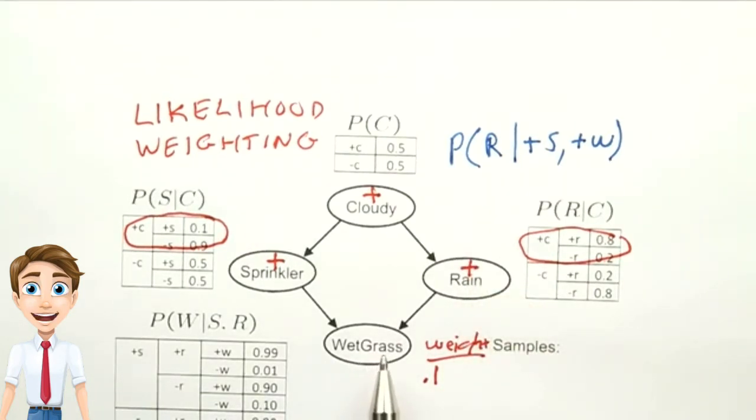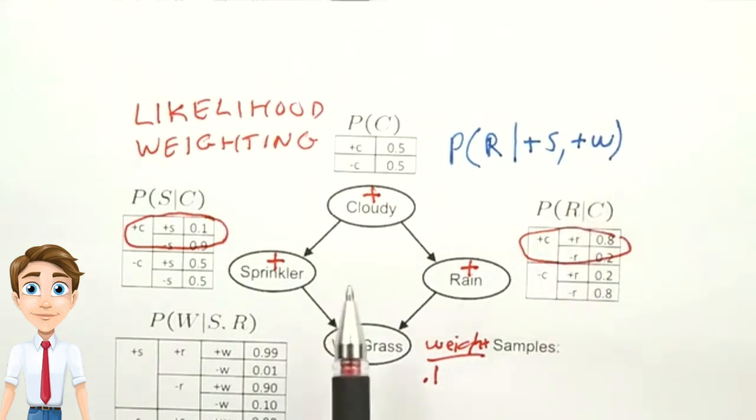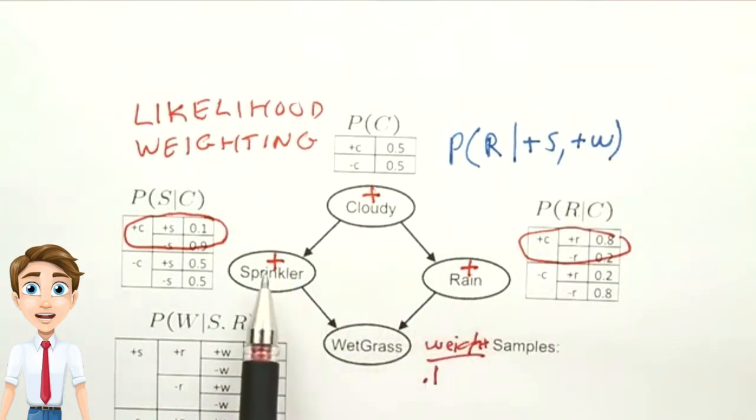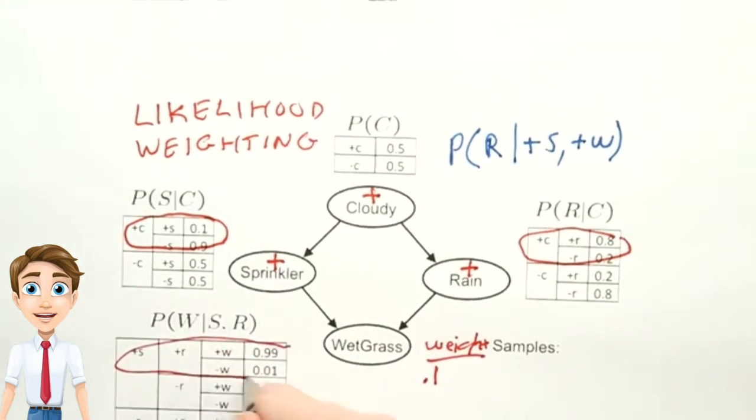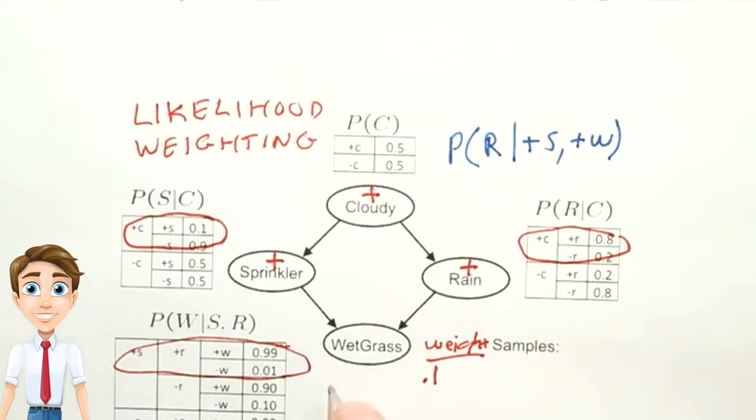Now we look at wet grass. We're constrained to choose positive, and we know that the parents are also positive. So we're dealing with this row here. Since it's a constrained choice, we're going to add in, or multiply in, an additional weight. And I want you to tell me what that weight should be.